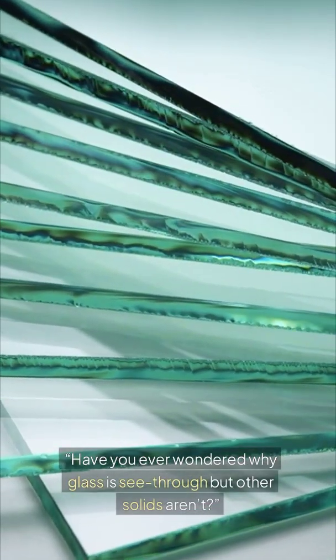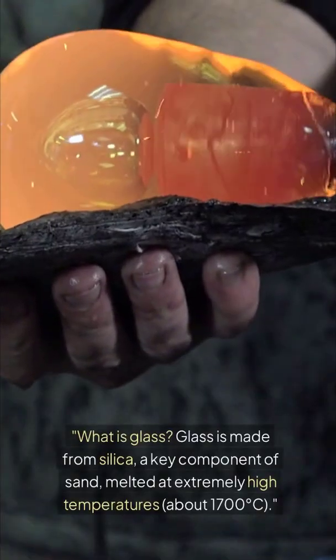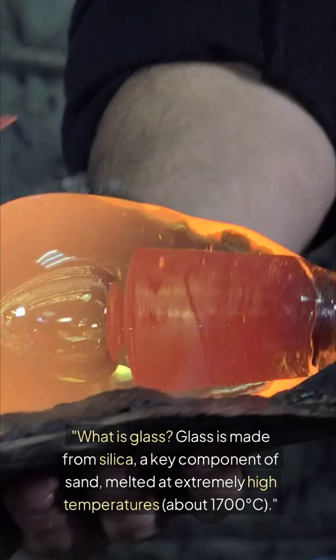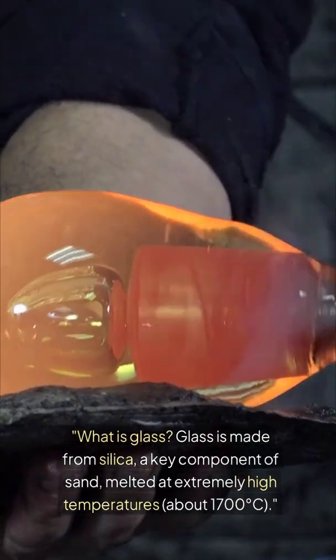Have you ever wondered why glass is see-through but other solids aren't? Let's break down the chemistry of glass in 60 seconds. What is glass? Glass is made from silica, a key component of sand, melted at extremely high temperatures about 1700 degrees Celsius.